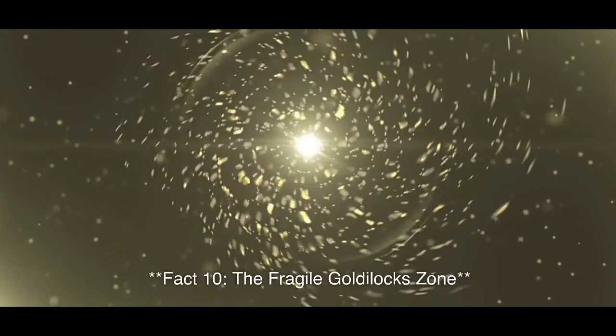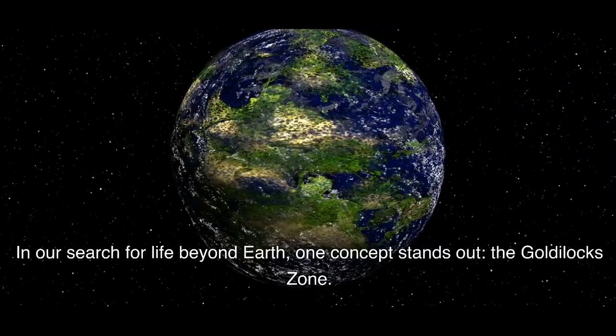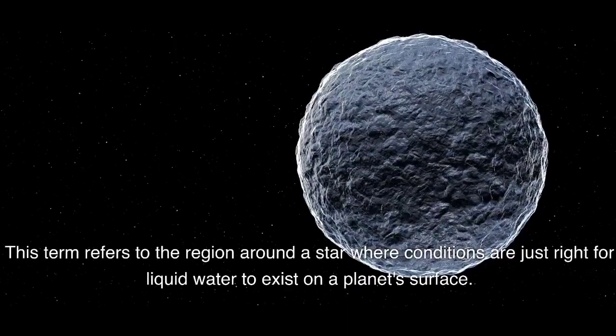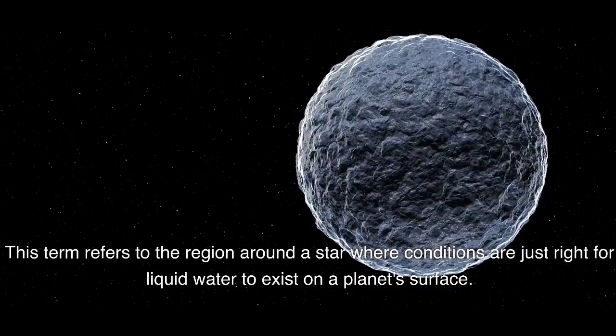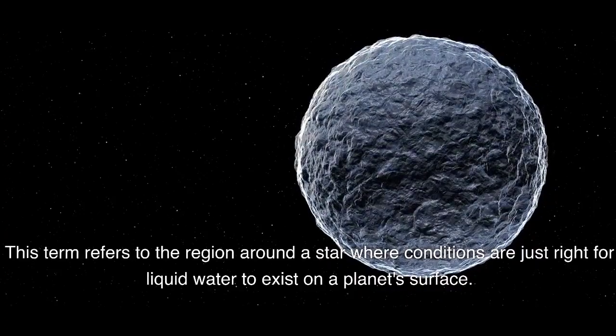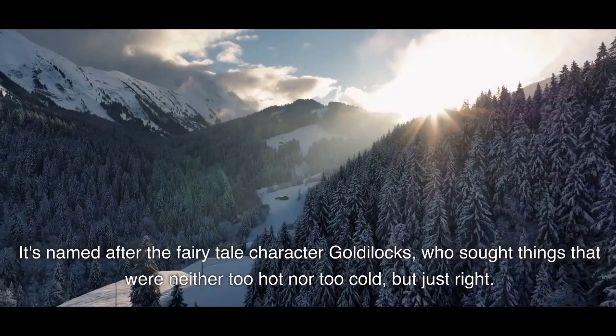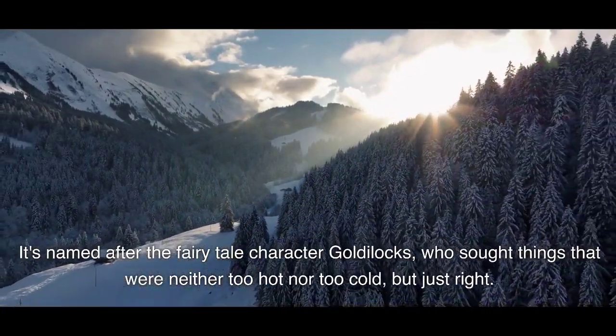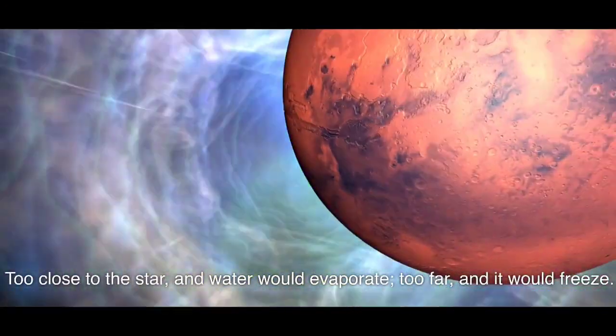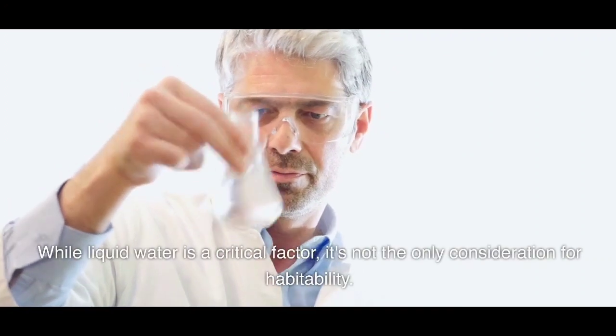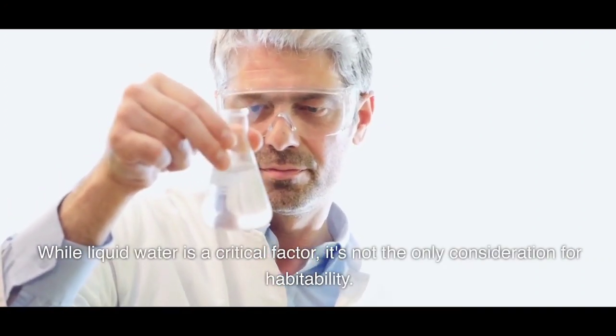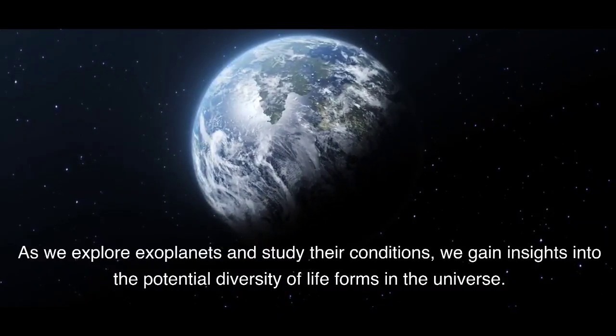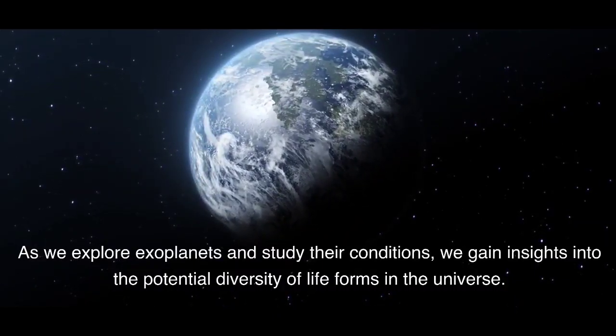Fact 10, The Fragile Goldilocks Zone. In our search for life beyond Earth, one concept stands out: the Goldilocks Zone. This term refers to the region around a star where conditions are just right for liquid water to exist on a planet's surface. It's named after the fairy tale character Goldilocks, who saw things that were neither too hot nor too cold, but just right. Too close to the star, and water would evaporate; too far, and it would freeze. While liquid water is a critical factor, it's not the only consideration for habitability. As we explore exoplanets and study their conditions, we gain insights into the potential diversity of life forms in the universe.